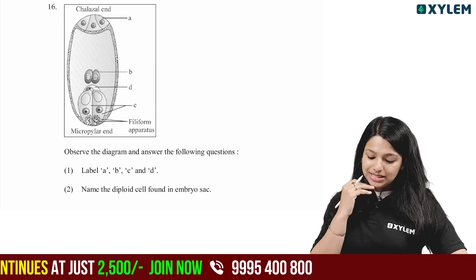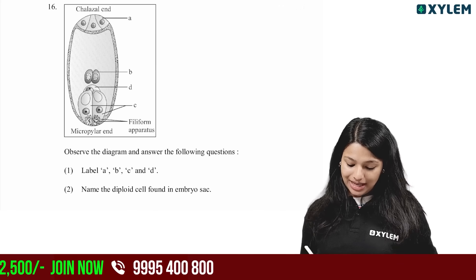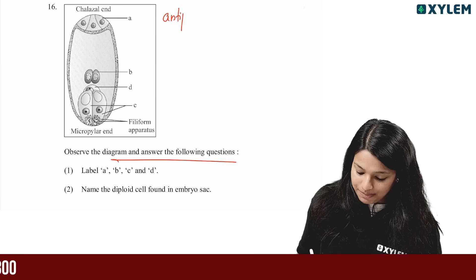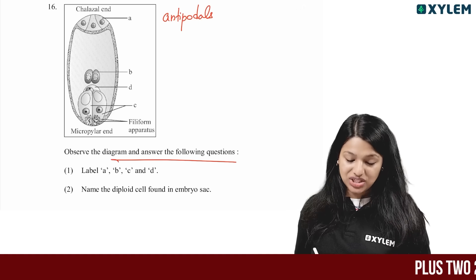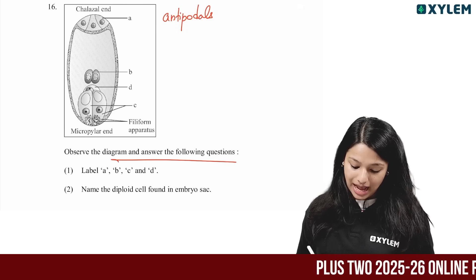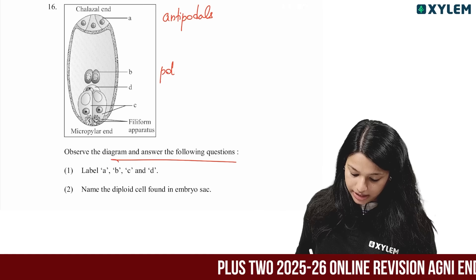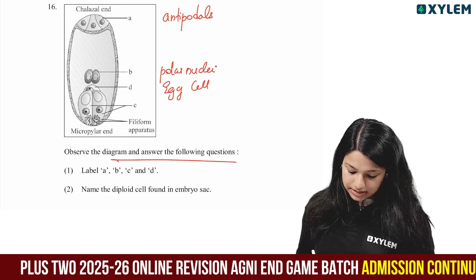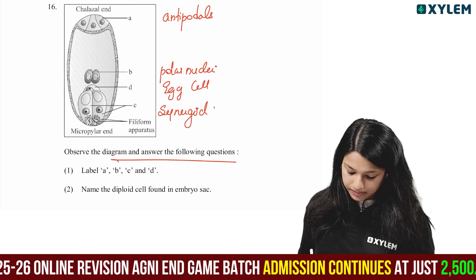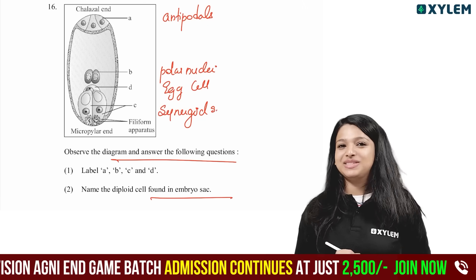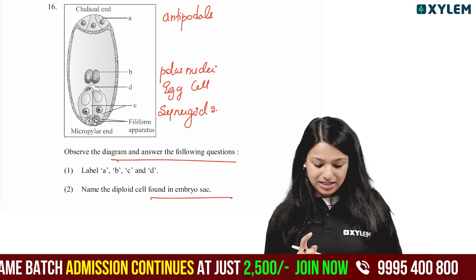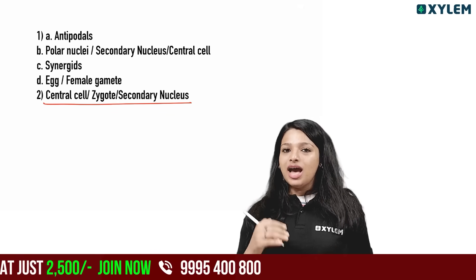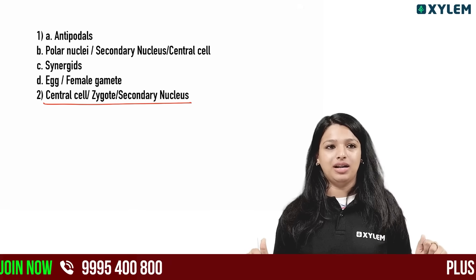This is the embryo sac diagram with micropylar end. Label A, B, C, D in the embryo sac. A is the egg cell. Antipodals — that is the antipodals. The polar nuclei are B. D is the egg cell. C is the synergids. The biggest cell in the embryo sac is the central cell, containing two polar nuclei which fuse to form the primary endosperm nucleus.